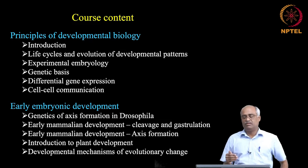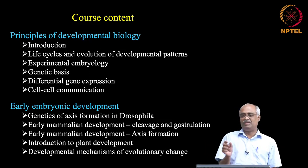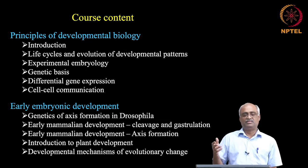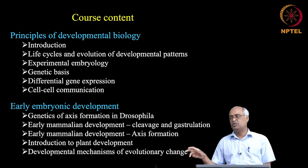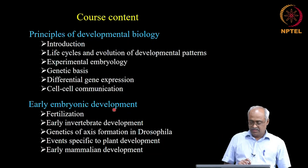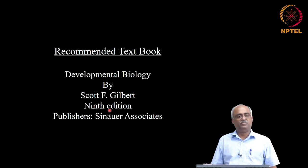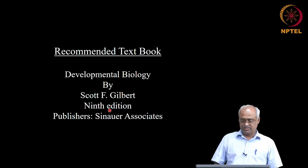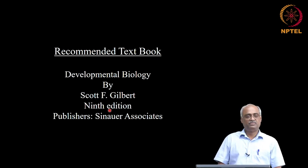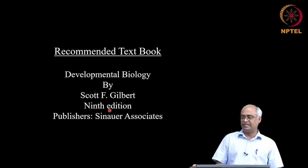What we will not cover is the development of individual organs of a multicellular organism. We may do one or two examples, but we are not going to talk about how the heart, brain, or liver develops in mammals — that is not possible in an introductory course. The textbook is Developmental Biology by Scott Gilbert, 9th edition or later. Reading that one book will cover pretty much everything I am going to talk about.